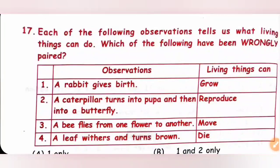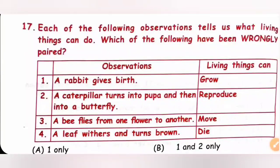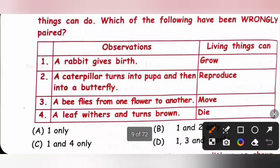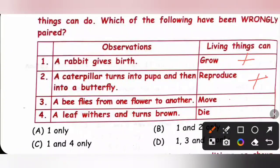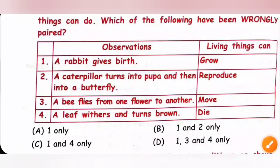Question 17: Which observations about living things have been wrongly paired? Observation 1: A rabbit gives birth — paired with 'grow' — incorrect, it should be 'reproduce.' Observation 2: A caterpillar turns into pupa then butterfly — paired with 'reproduce' — incorrect, it should be 'grow.' Observation 3: A bee flies from one flower to another — paired with 'movement' — correct. Observation 4: A leaf withers and turns brown — paired with 'die' — correct. Observations 1 and 2 are wrongly paired, so option B is the correct answer.